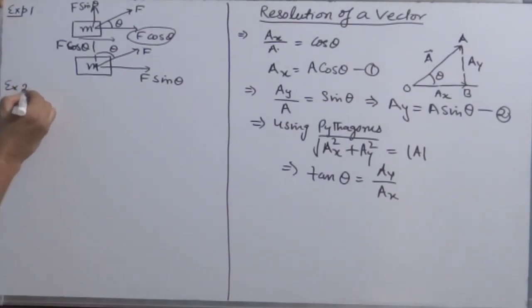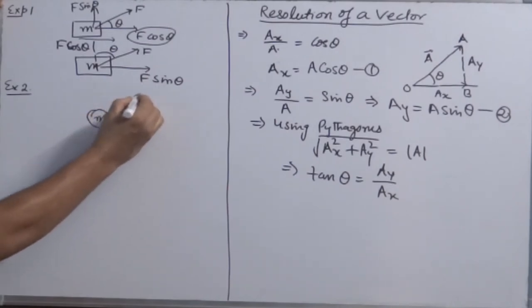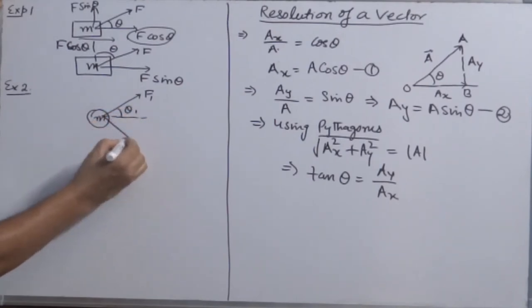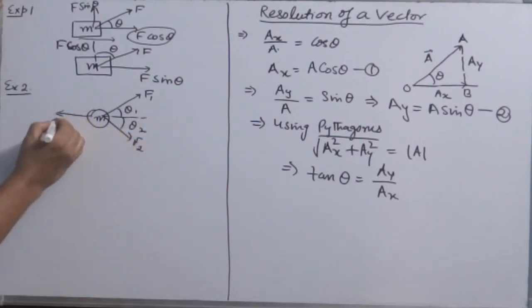Example 2. Suppose any object is acted by so many forces: F1 at an angle theta 1, F2 at an angle theta 2, F3, F4.